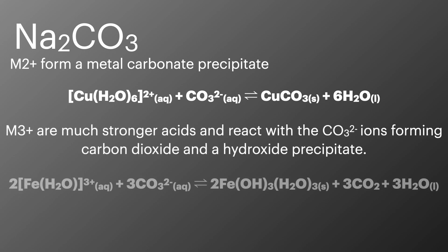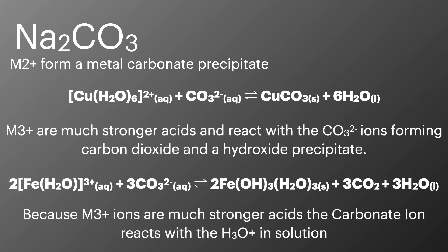The metal 3 plus ions are stronger acids and react with the metal carbonate as an acid forming water and carbon dioxide along with the metal hydroxide precipitate. The main difference in observations between these two reactions is that bubbles are formed in the reaction with the 3 plus metal ions.